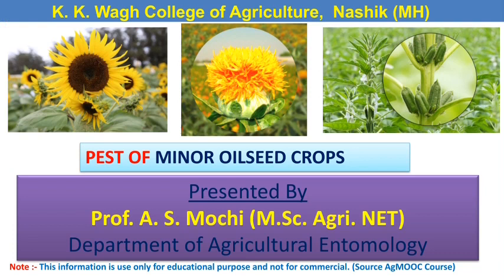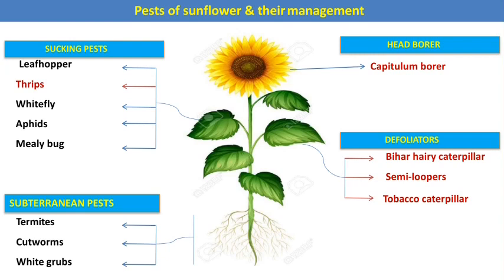Hello friends, welcome you all. Today we are going to learn about the pest management in different minor oilseed crops. The minor oilseed crops include sunflower, safflower, sesame, mustard, and castor. Let us start one by one the pest management in minor oilseed crops.